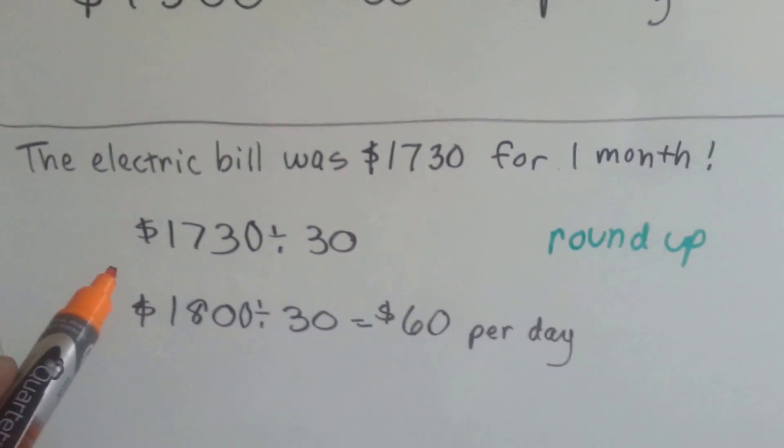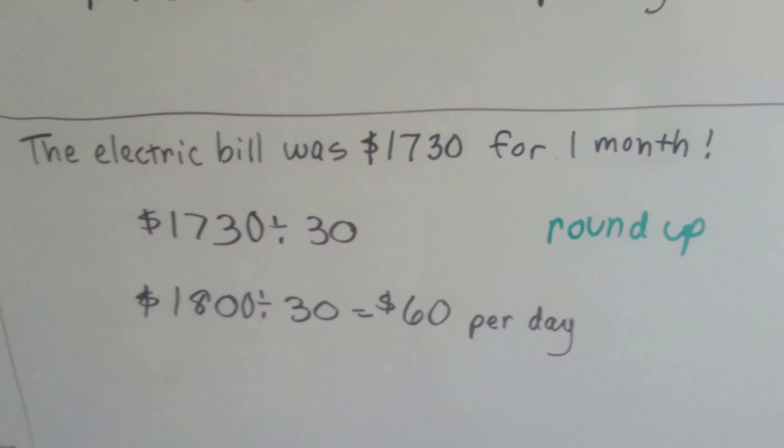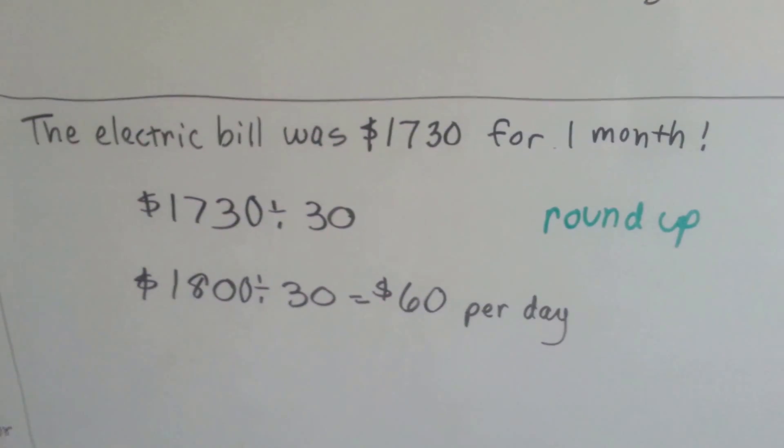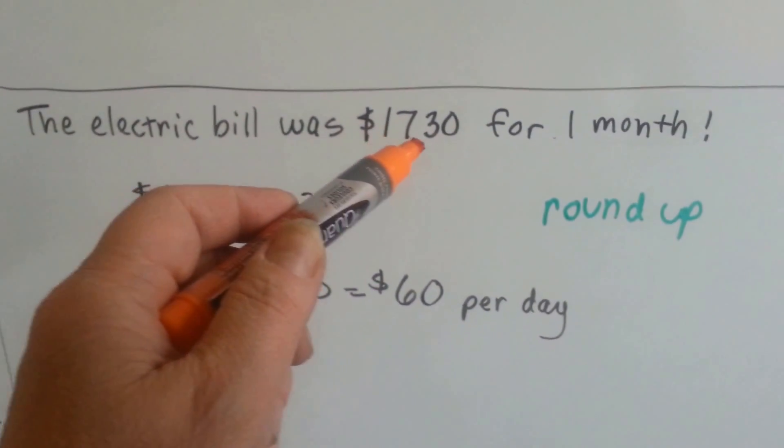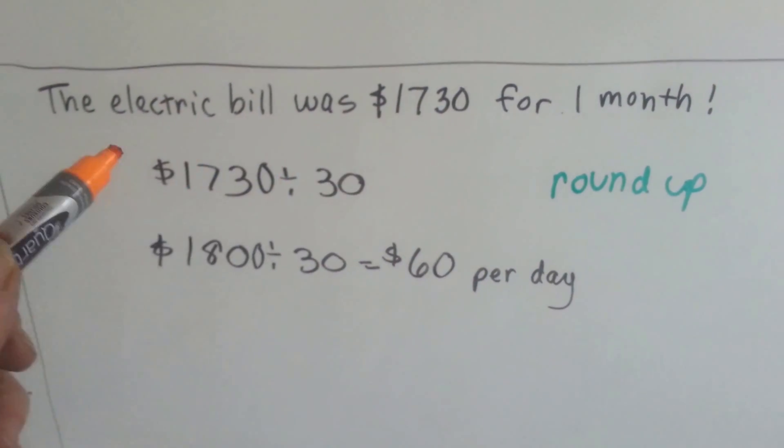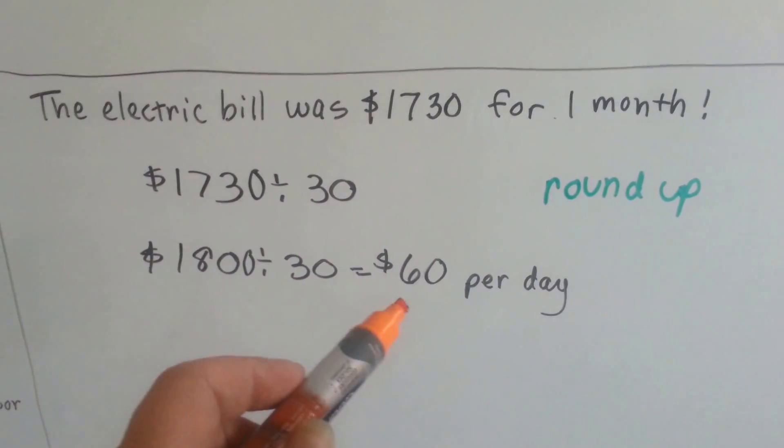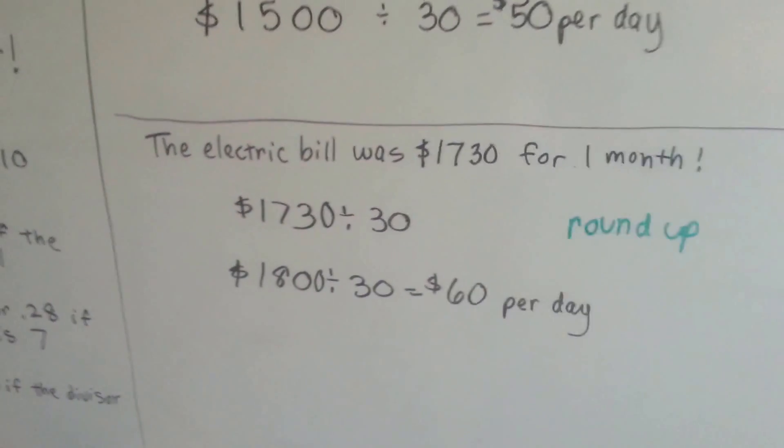So what if our electric bill at Christmas, because you decided to go wacky with the Christmas lights, and they were all over the house, and you were in the newspaper, and you were famous because of all your Christmas lights, but then you got the electric bill in January, and it was $1,730 for one month. You'd be able to round up to $1,800 and say, ooh, it cost me about $60 per day to have all those Christmas lights up. See?